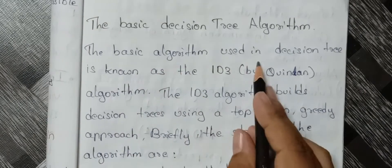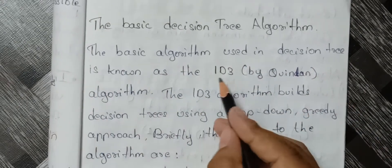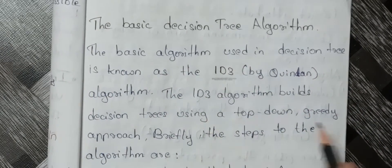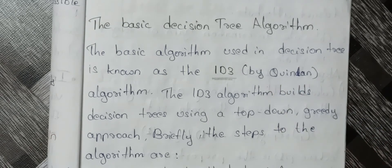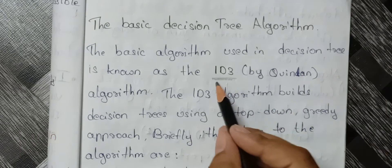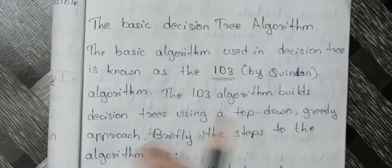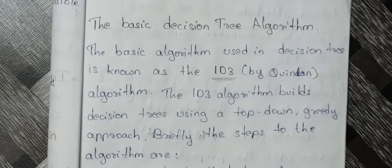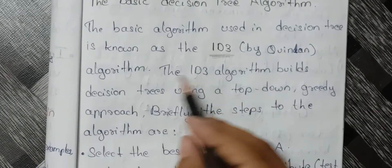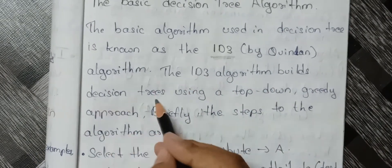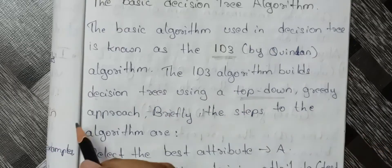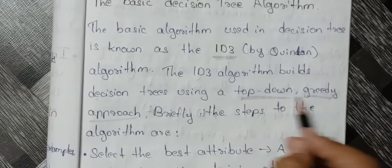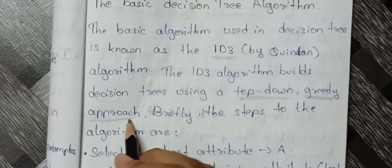The basic algorithm used in decision tree is known as the ID3. The ID3 algorithm builds decision trees using a top-down greedy approach.